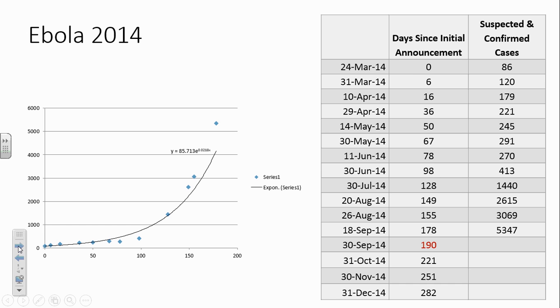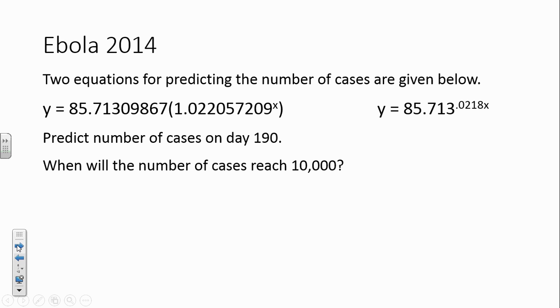My equation was 85.713 E to the 0.0213X. Very hard for you to see there, but that's what the table was looking like on about the end of September, first part of October. We can use that equation to predict the future. This was the equation from Excel. This was the equation from graphing calculator. Fairly similar. So how would we predict the number of cases on day 190?